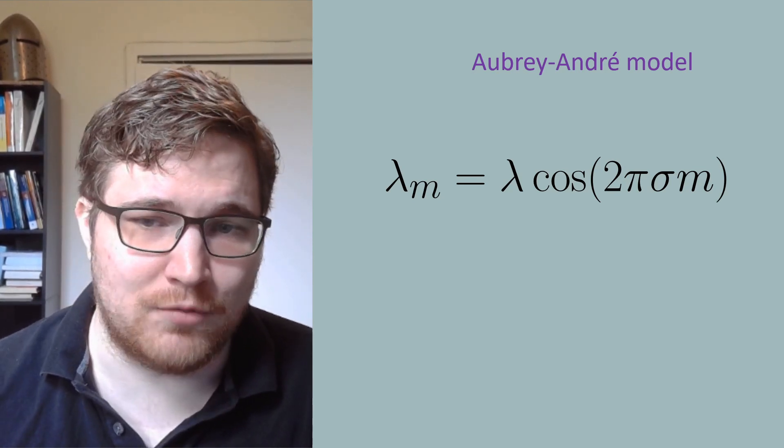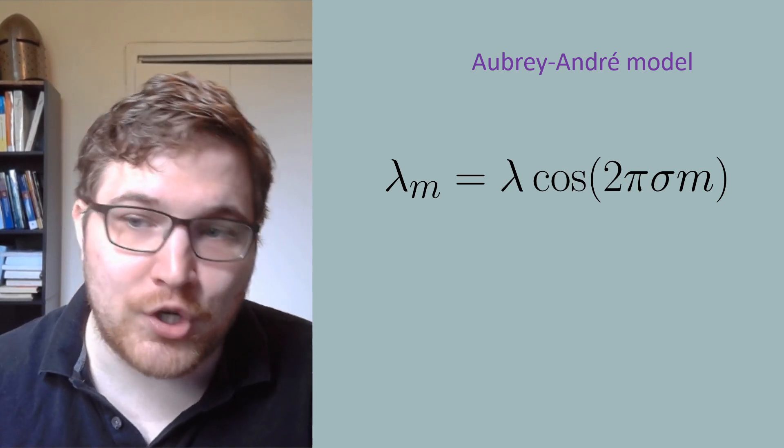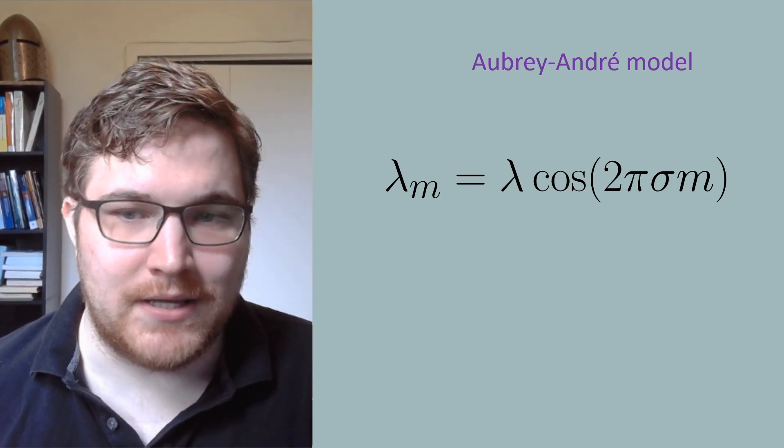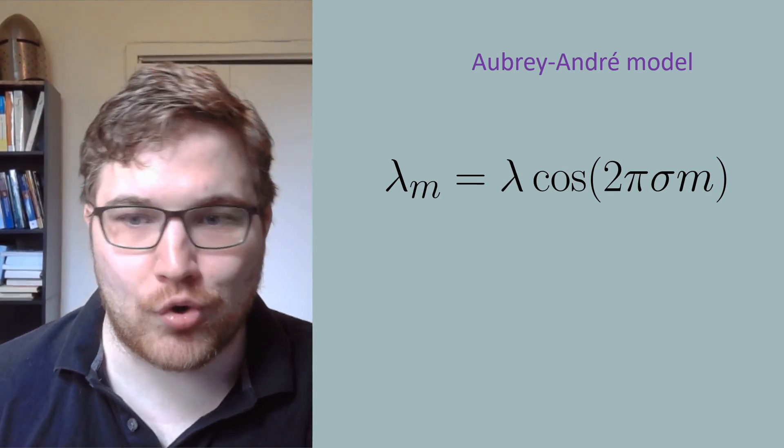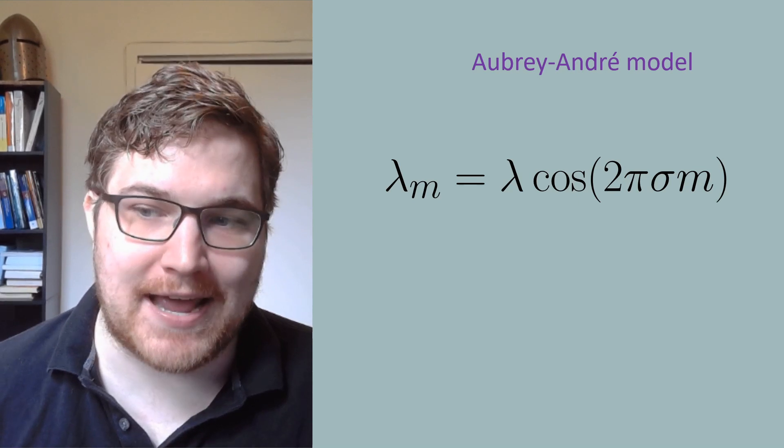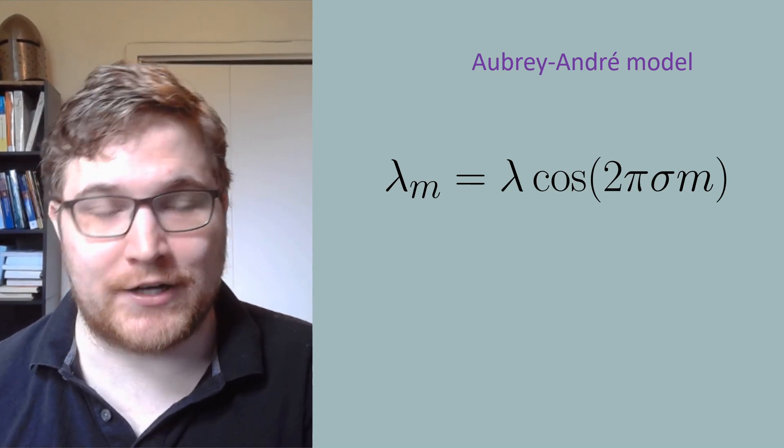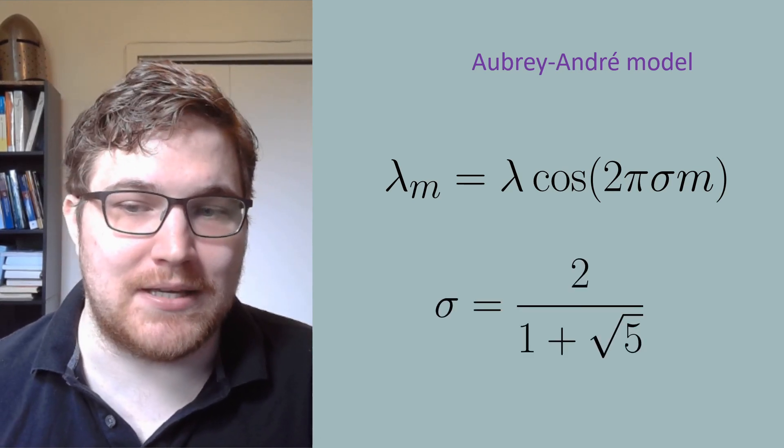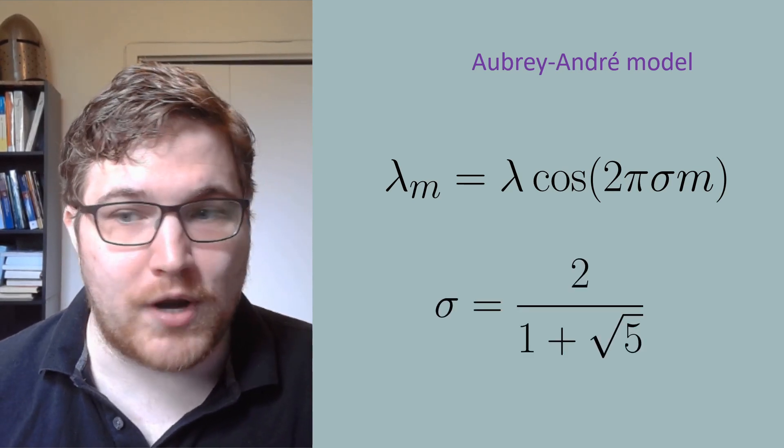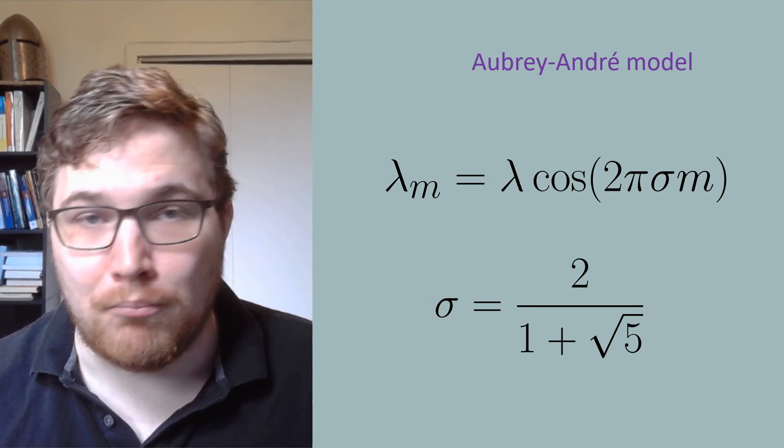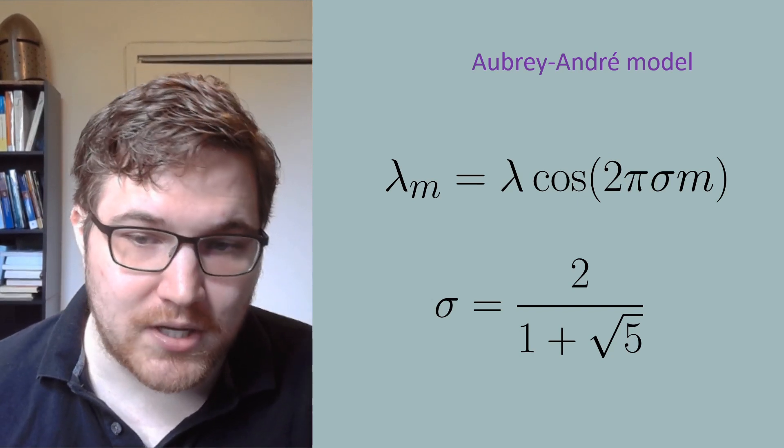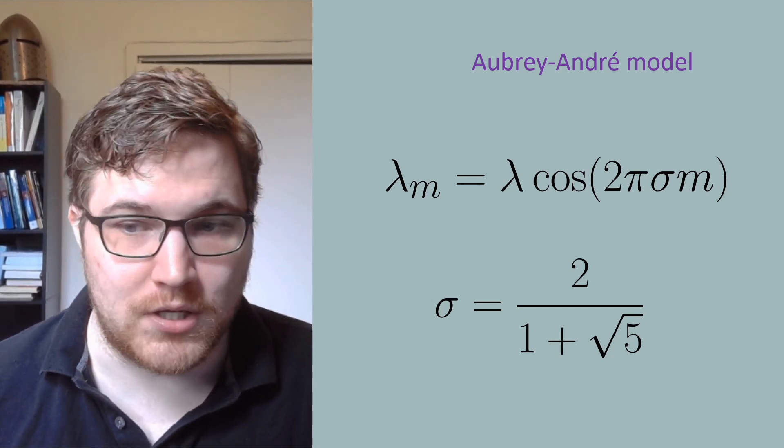Sigma here is taken to be an irrational number, or at least a very good approximation to an irrational number. The constant lambda is our so-called disorder parameter and will dictate how disordered the medium is that the electrons need to travel through. In most examples, sigma is taken to be the inverse golden ratio, which is the so-called most irrational number. This then makes the period of the cosine equal to the golden ratio.